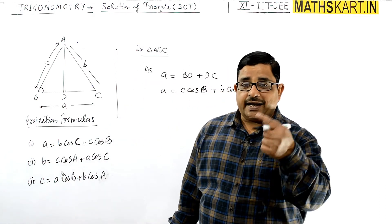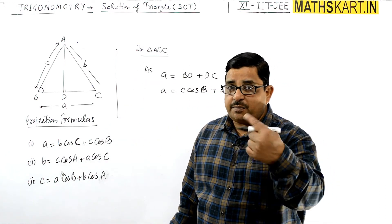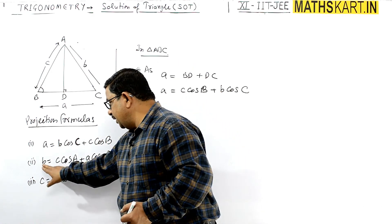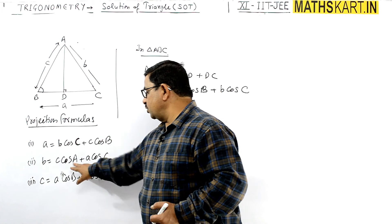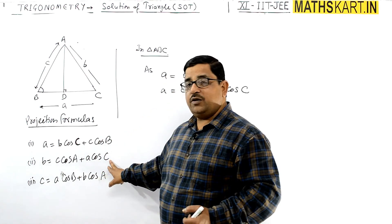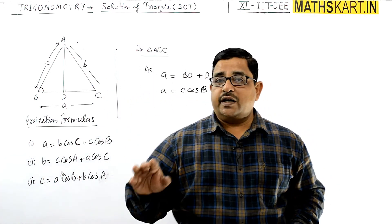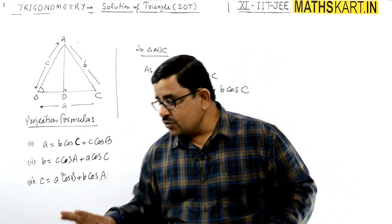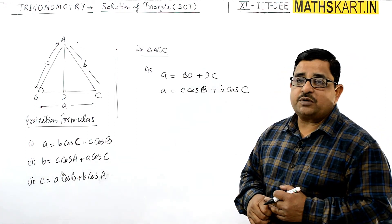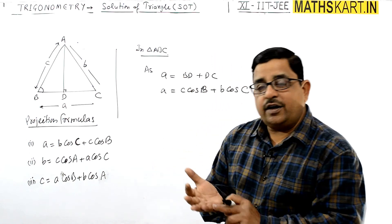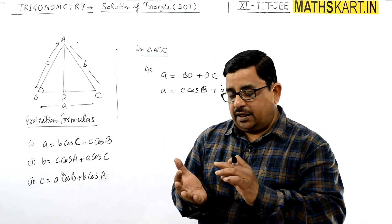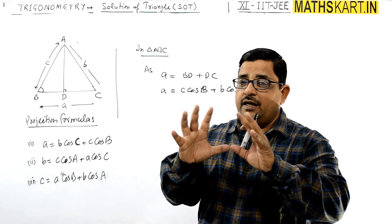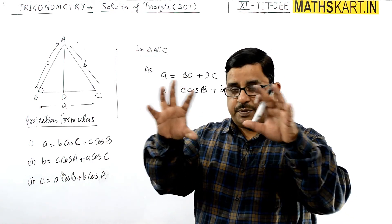To remember all three projection formulas, use the cyclic order: ABC, BCA, CAB. For the first: a = b·cos C + c·cos B. Cycling gives b = c·cos A + a·cos C, and then c = a·cos B + b·cos A. This cyclic order makes all three easy to recall. We have now covered sine rule, area of triangle, cosine law, and projection formulas — next come the questions.